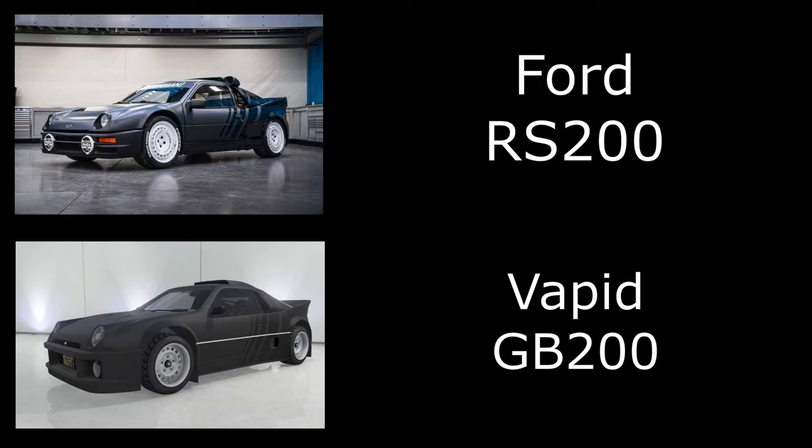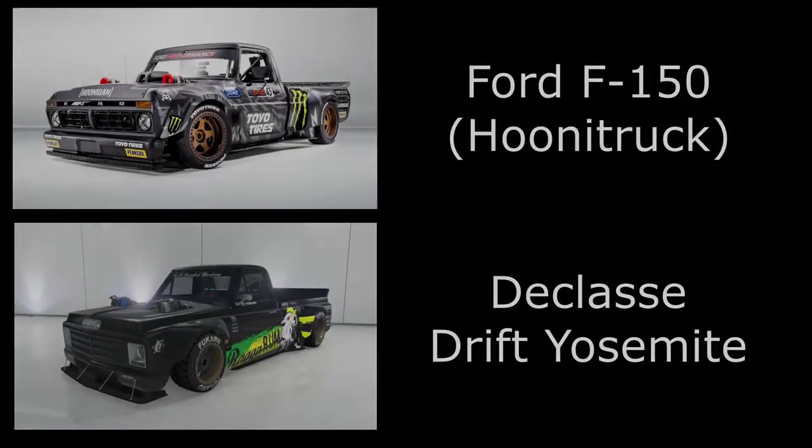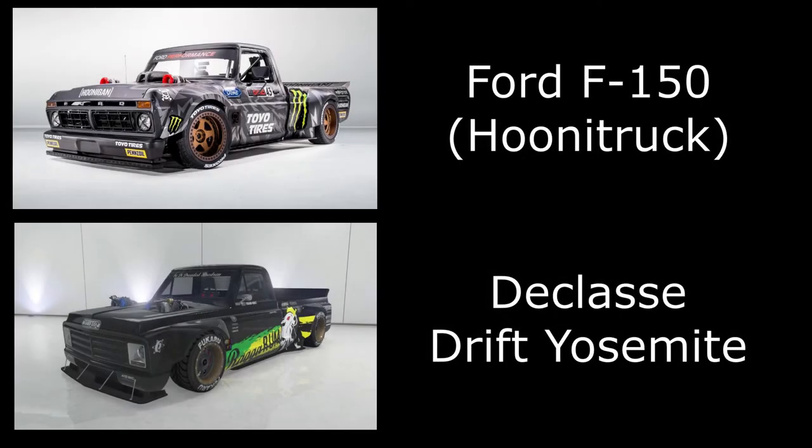Next we have the RS200, and for this one I've used the Vapid GB200. You can get this one almost identical — I couldn't quite get the wheels to match, but you can get the right livery and most of the upgrades as well.